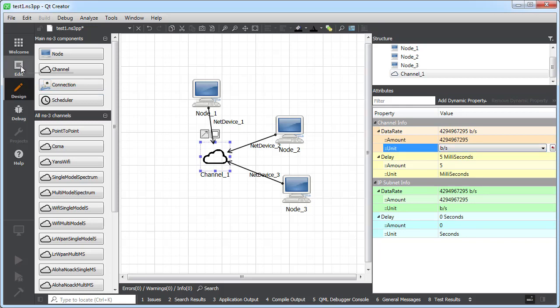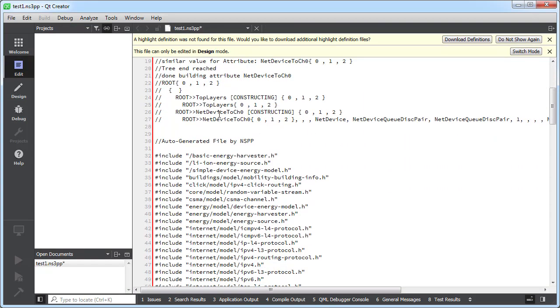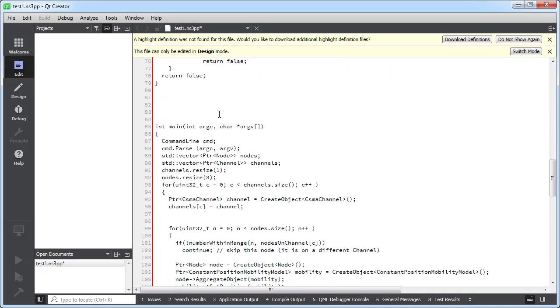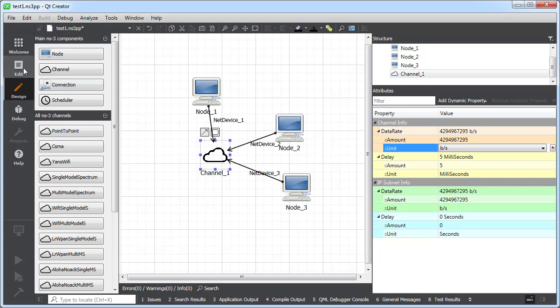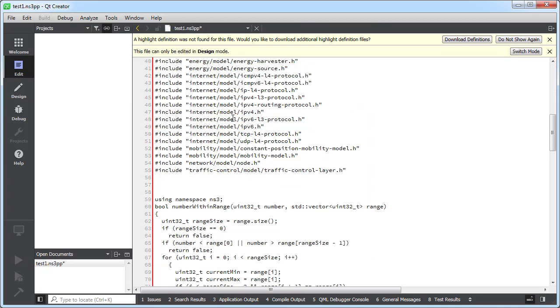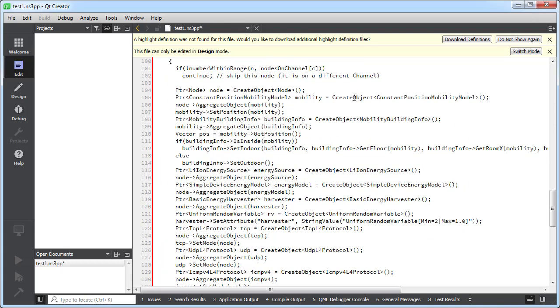If I go from the design mode to the edit mode, then NS3++ converts my topology into C++ code, as you can see here. Of course, this is an early version, so we don't have all the source code. But you can clearly see, for example, that we created three nodes and one channel, just like what we have in our scenario. We also see here that we created a constant position mobility model, which we selected. We also notice here that we created a lithium-ion energy source that we created. This C++ code is not full just yet, but as you select and change attributes, you'll notice that the created C++ file will reflect those attributes.